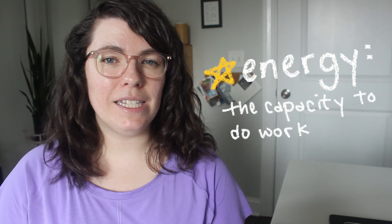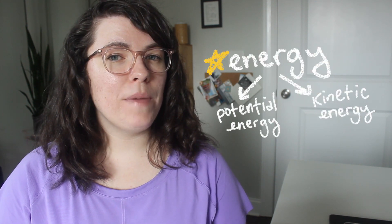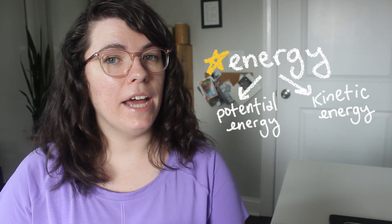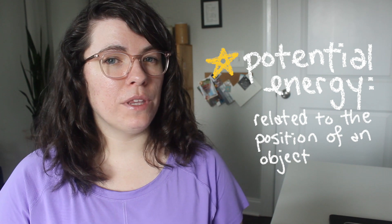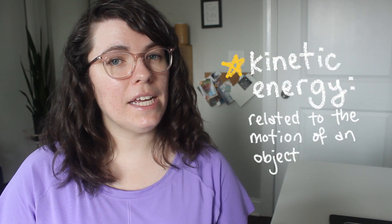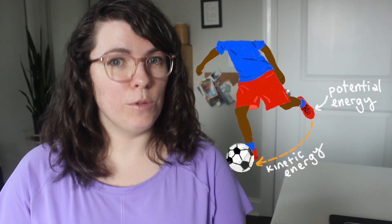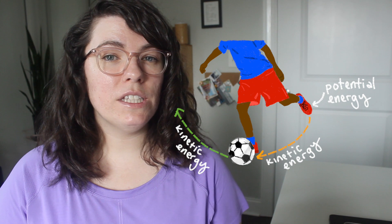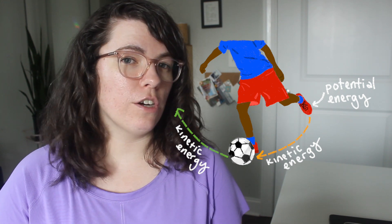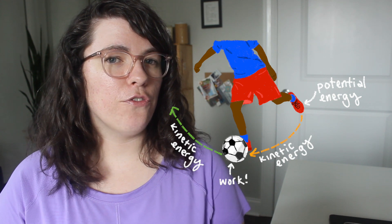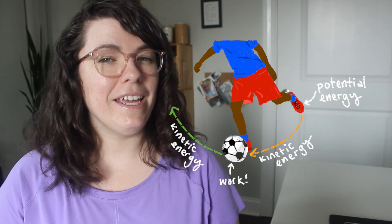The definition of energy is the capacity to do work. The two main states of energy are potential energy and kinetic energy. Potential energy has to do with the position of an object, whereas kinetic energy has to do with its motion. Consider lifting your foot to kick a soccer ball. When you're holding your foot back before you kick it, your foot has potential energy — it is in the position to move. When it's swinging, it has kinetic energy. When your foot hits the ball, it transfers that energy to the ball, which in turn moves. This transfer of energy from the foot to the ball is the work.